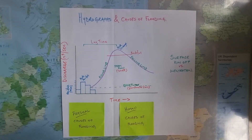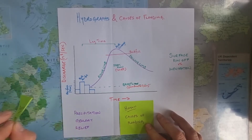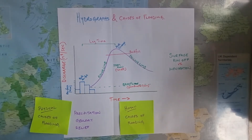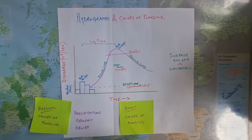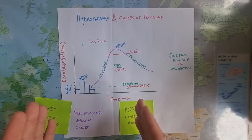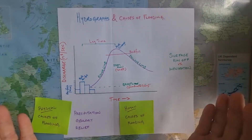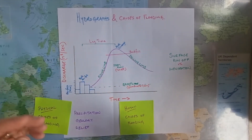Now we drill into the physical causes of flooding. First, precipitation — if it is torrential or prolonged rain, then we're going to get a flashy response, a short lag time, and a flood. In terms of geology, if we have impermeable rocks that don't allow water to get through them, then again it's a flashy response, a short lag time, and a flood. And then thirdly, relief — the shape of the land. If we have steep slopes either side of the river, we're going to get a flashy response, because the water will run off the surface and find itself in the river very quickly, with a short lag time, and then a flood.